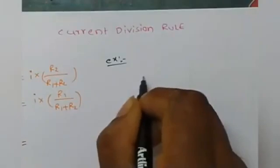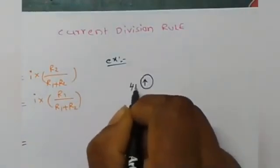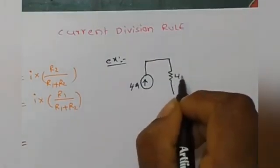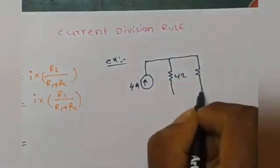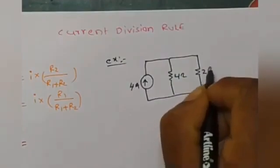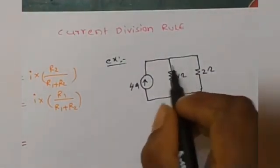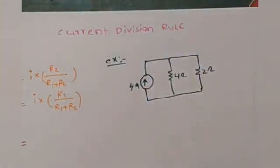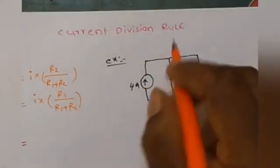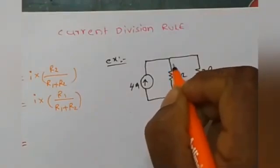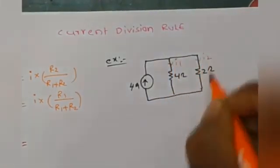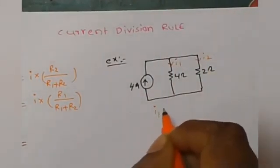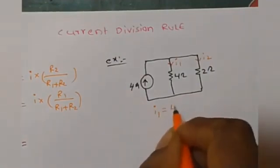Now for an example: a 4-ampere current source is connected to two resistors — 4 ohms and 2 ohms — connected in parallel. We want to find out I1 and I2 using the current division rule.